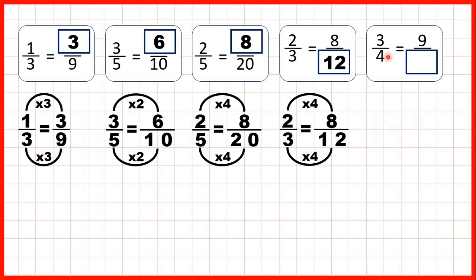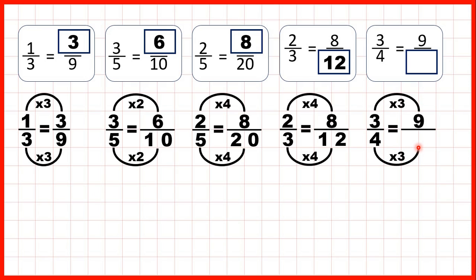Two thirds is equivalent to eight twelfths. Now, three quarters is equivalent to nine over what? Well, three times three is nine, and what we do to the numerator we need to do to the denominator. Four times three is twelve, so our missing denominator is twelve. Three quarters has the same value as nine twelfths.